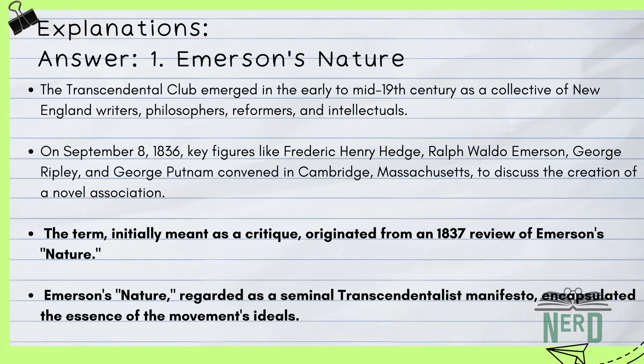Here's the explanation. Back in the early to mid 19th century, a bunch of writers, philosophers, reformers, and brainy folks in New England got together and kicked off what we now know as transcendentalism — they called themselves the Transcendental Club. On September 8th, 1836, key players like Frederick Henry Hedge, Ralph Waldo Emerson, George Ripley, and George Putnam met up in Cambridge, Massachusetts to start this new club, with their first official hangout at Ripley's Place in Boston. The group grew to include Amos Bronson Alcott, Theodore Parker, Henry David Thoreau, and pioneering women like Sophia Ripley and Margaret Fuller. Interestingly, they never actually called themselves the Transcendental Club — that name was something the public and critics threw at them after an 1837 review of Emerson's work, Nature.